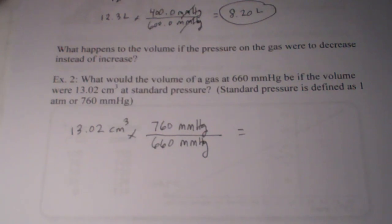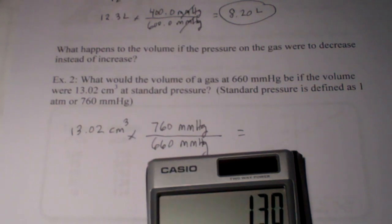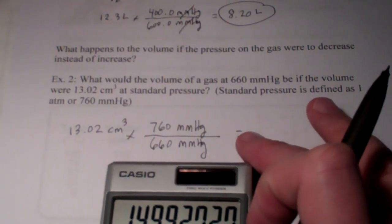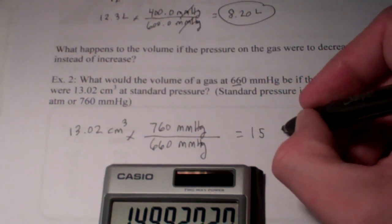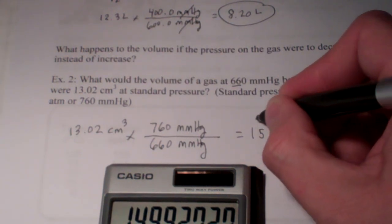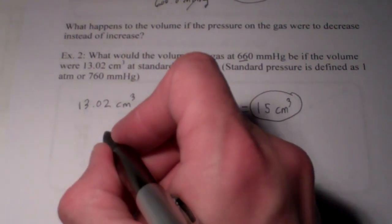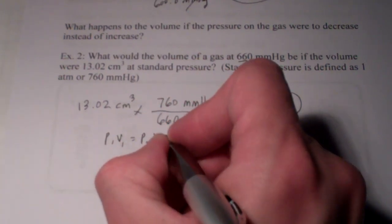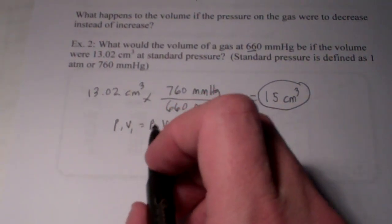So, let's see what we get when we multiply this out. We'll clear that out from before. And we have 13.02 times 760, divided by 660. And I get 14.99. Looks like I'm only allowed two significant figures. So I'm going to say 15 cubic centimeters. Now, if you prefer, and you would like to use P1 V1 equals P2 V2, you may do that, and you're going to get the same answer. Let me show you.